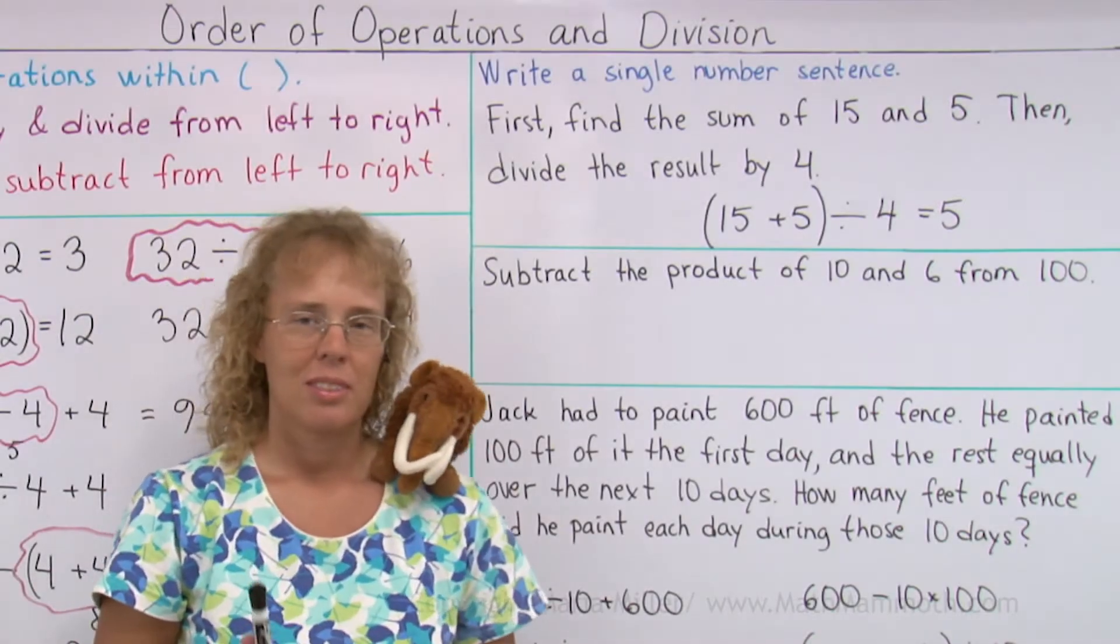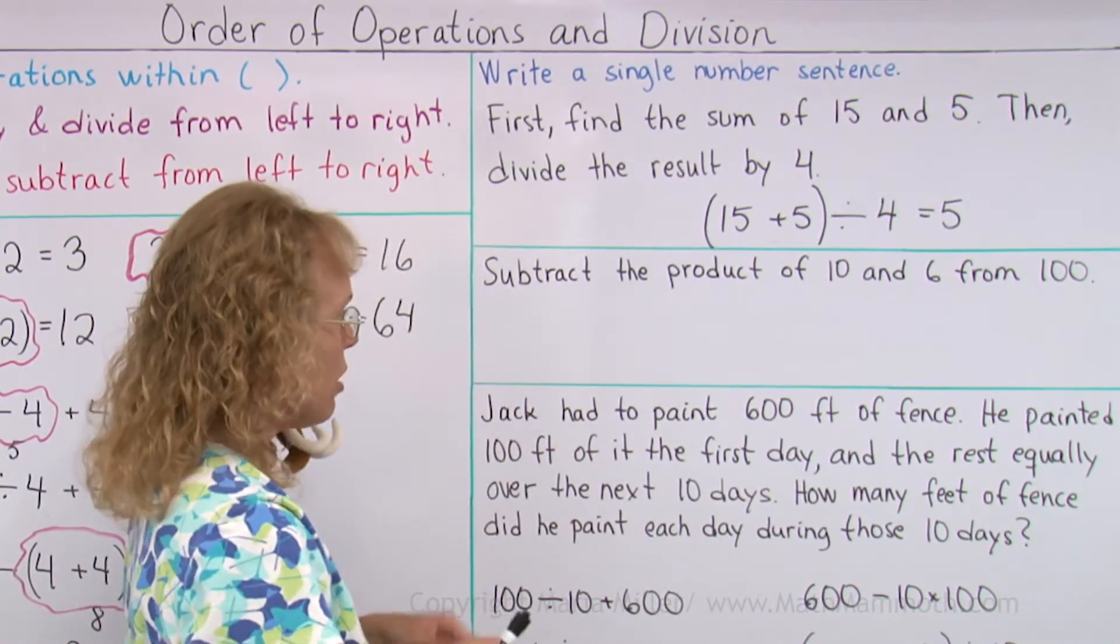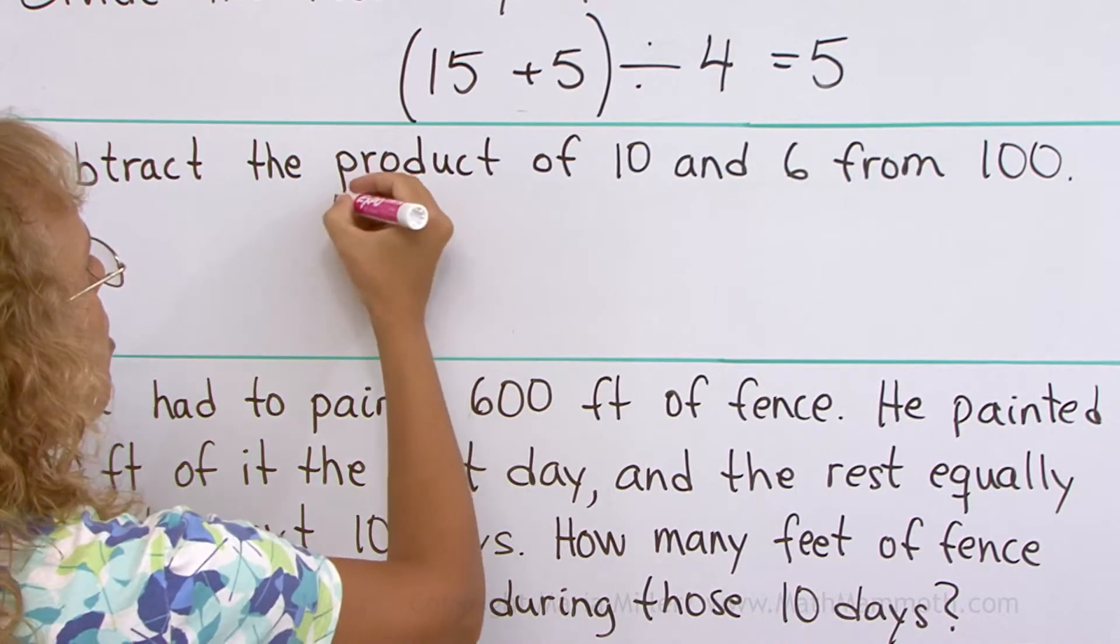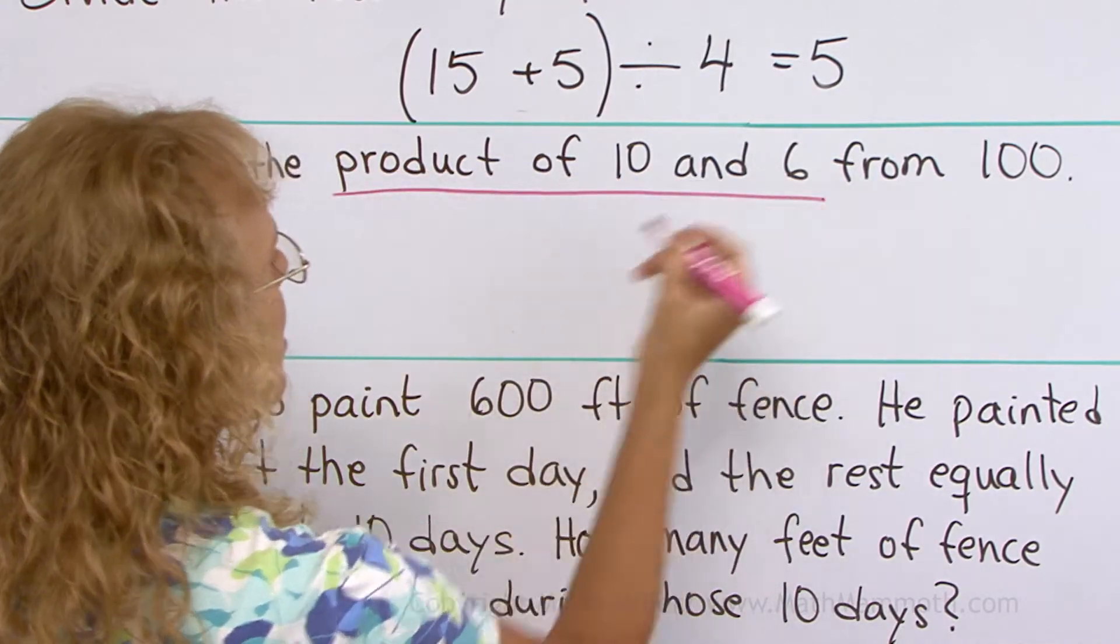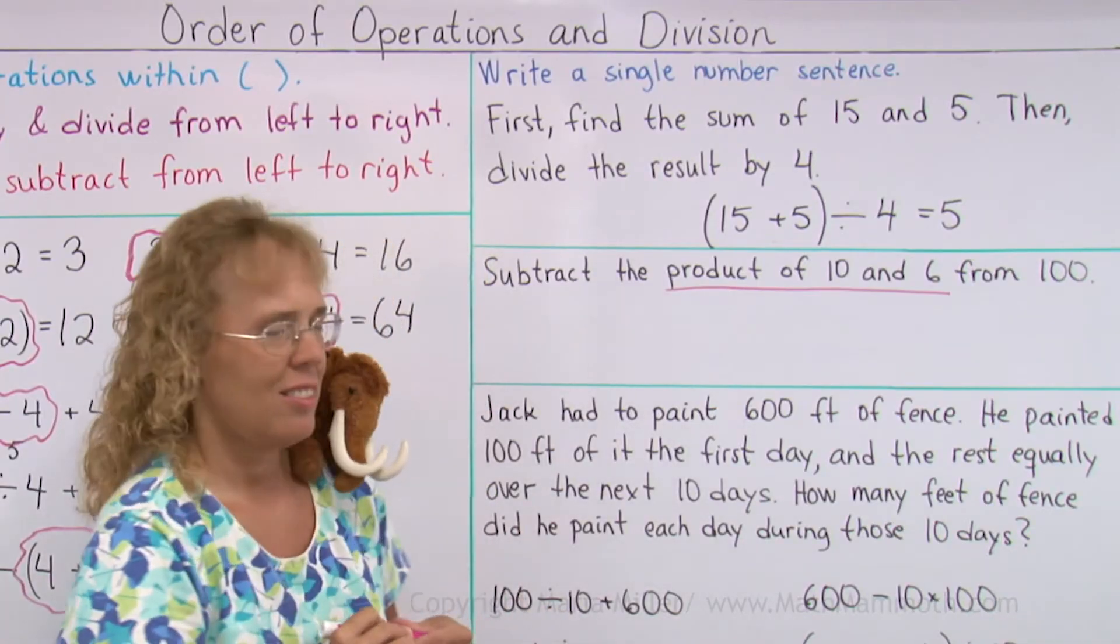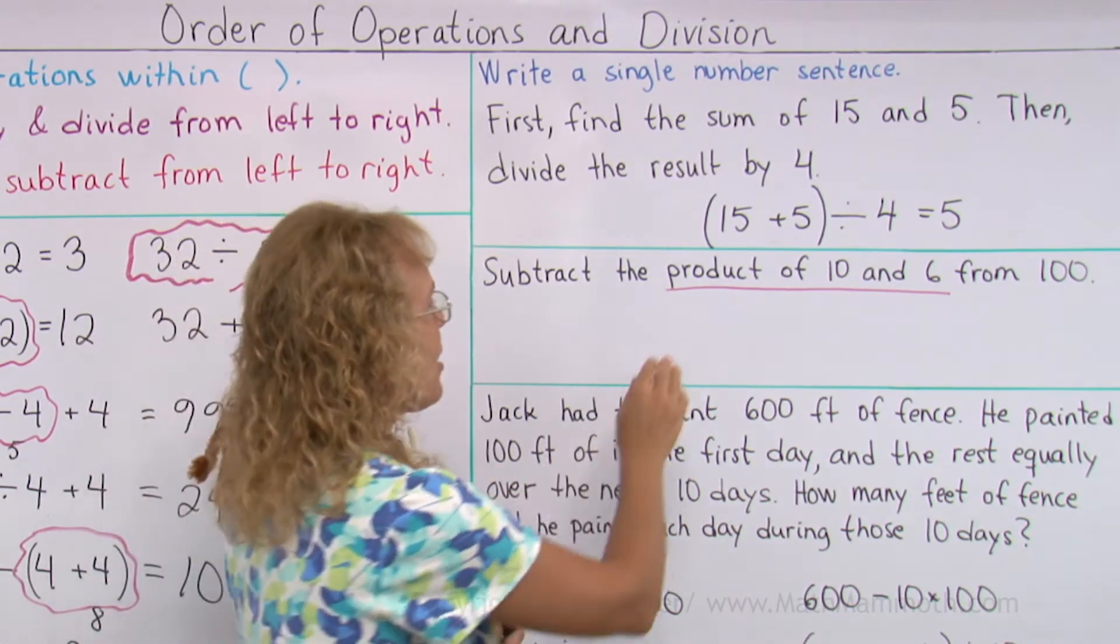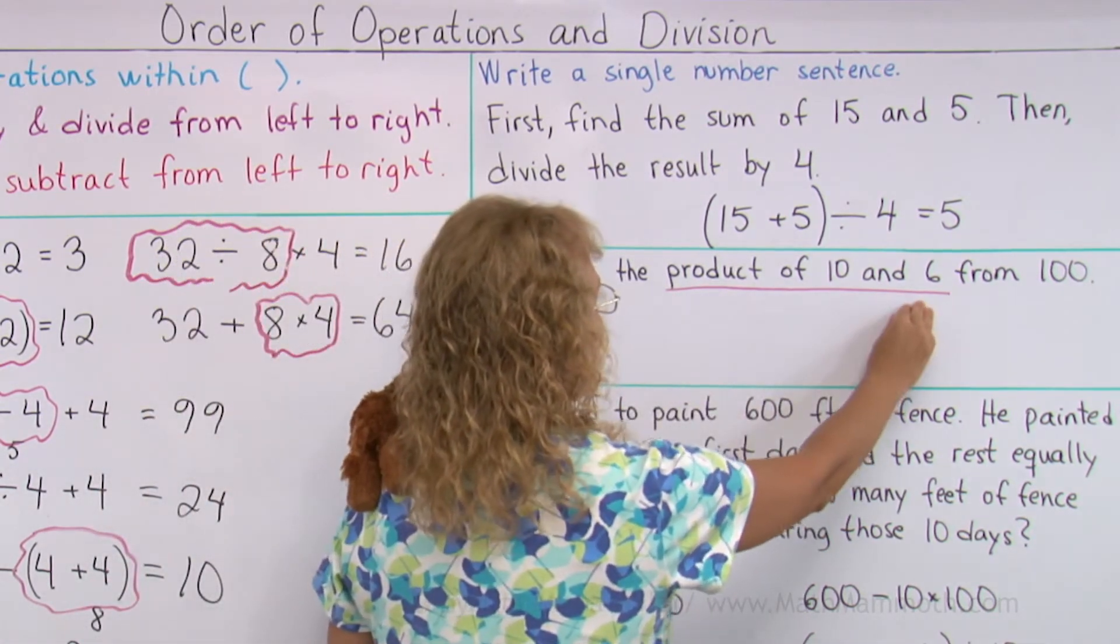Another one. Subtract the product of 10 and 6 from 100. Notice here this product of 10 and 6. Product. It means the answer to a multiplication problem. So that means multiply 10 and 6, okay?